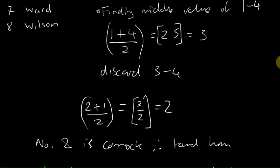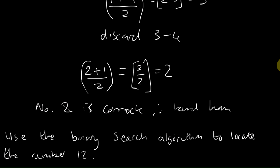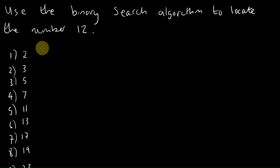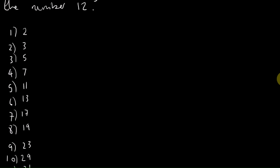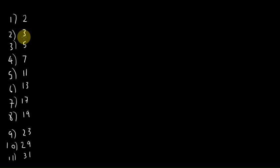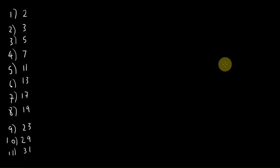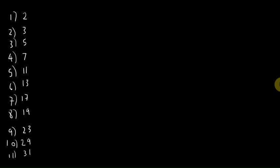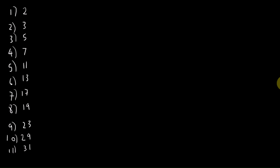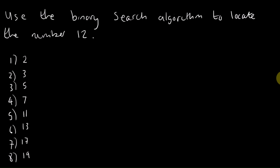Let's do another example using the binary search algorithm. The question is: use the binary search algorithm to locate the number 12. You can look down this list and see that 12 isn't there. These algorithms are used for loads and loads of numbers — millions of numbers. These are just tiny examples to help you understand what's going on.